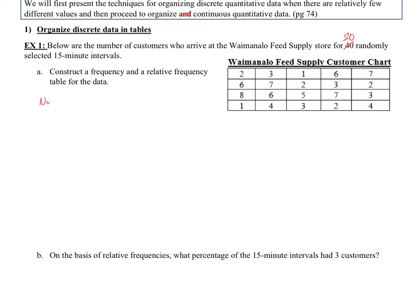Let's set up our table with number of customers, frequency (F), and relative frequency (RF). The number of customers goes between one and eight. For the frequency — how many times we see each value — we only see one twice, and we see two four times.